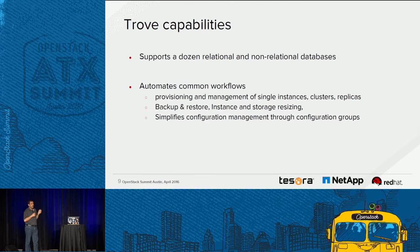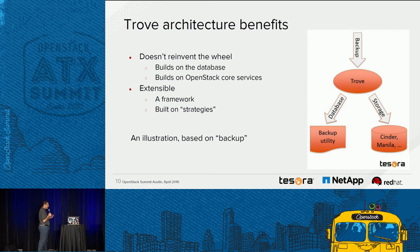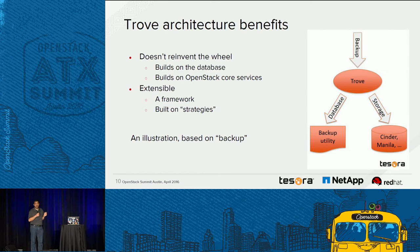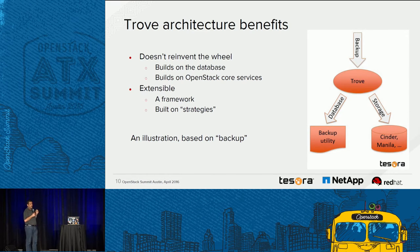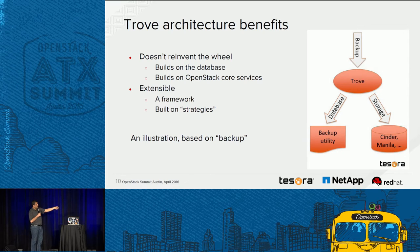Trove does not physically implement backup either. Whatever mechanism the database has for backup, we give that to you as a managed service and simplify configuration management. For example with Postgres, you can do backups in one of three ways: a database dump, Percona XtraBackup, or incremental backup. Trove implements a notion of a strategy to do the backup. The user requests a backup from Trove, Trove uses the database-native backup utility as a strategy, and then sends the data — currently to Swift.